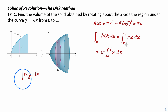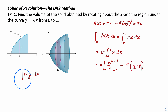Taking the antiderivative gives us π times x²/2, evaluated from 0 to 1. Plugging in the upper limit of integration gives one half; plugging in the lower limit gives zero. So it's π times (1/2 − 0), which gives us π/2 cubic units. The volume of this solid is π/2 cubic units.